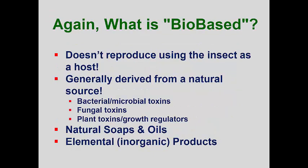Before we get to some predators and parasitoids, let's take a quick look at some of the bio-based materials. Remember that these are usually toxins derived from naturally occurring bacteria, fungi, and plants. Some scientists also include natural soaps, plant-based and horticultural oils, and elemental products like sulfur in this group. Powdered sulfur has been used for centuries for mite and disease control. Because of time constraints, I'll emphasize the BT toxins.